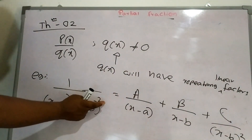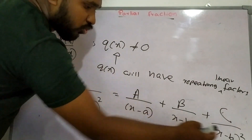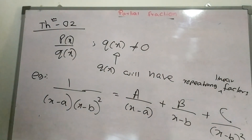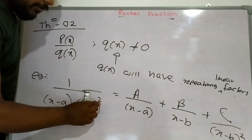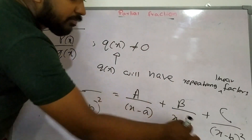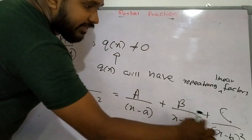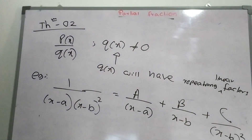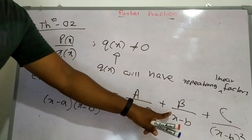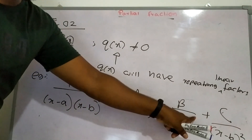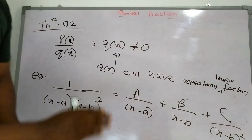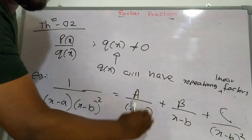If it is fourth power, you will have one, two, three, four terms. All the time, if you have a repeating factor, you start from the first order until the last order that you have. If it is nth order, you will have terms from 1 over (x minus b) up through 1 over (x minus b) to the nth power.